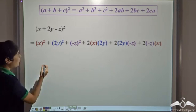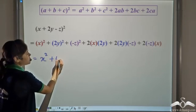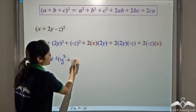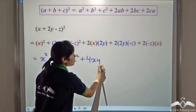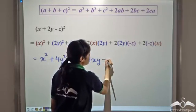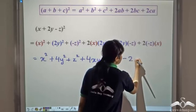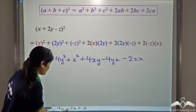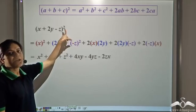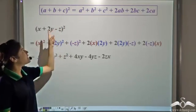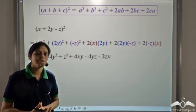Now we can calculate the squares: x² remains x², (2y)² is 4y², (negative z)² is z², 2 times x times 2y becomes 4xy, 2 times 2y times negative z becomes negative 4yz, and 2 times negative z times x becomes negative 2zx. So the final answer is x² plus 4y² plus z² plus 4xy minus 4yz minus 2zx. We have successfully expanded this trinomial and found its square using the identity.